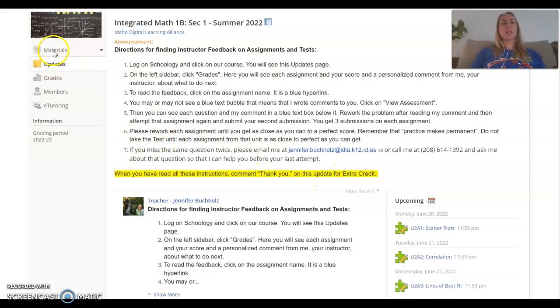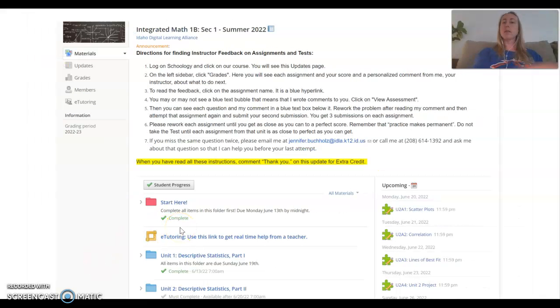After they read the updates the next thing they're going to do is click on this materials button up here on the left and when they do that it's going to look like this. They're going to see maybe an announcement at the top, maybe not, depends on the week. They're going to see their start here folder, their link for e-tutoring and then their units. A lot of students like to use this calendar function on the right which is really nice because it shows them the pacing guide. So it shows them on Monday I'm asking them to do the first assignment in unit 2, on Tuesday the second assignment in unit 2 and Wednesday and so on.